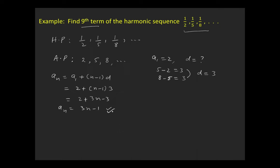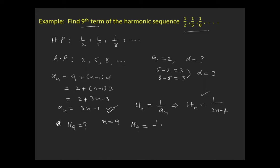The general term of the arithmetic progression is 3n − 1. By the formula hn = 1/an, the general term of the harmonic progression is hn = 1/(3n−1). To find the 9th term, put n = 9: h9 = 1/(3×9 − 1) = 1/26. So the 9th term of this harmonic sequence is 1/26.